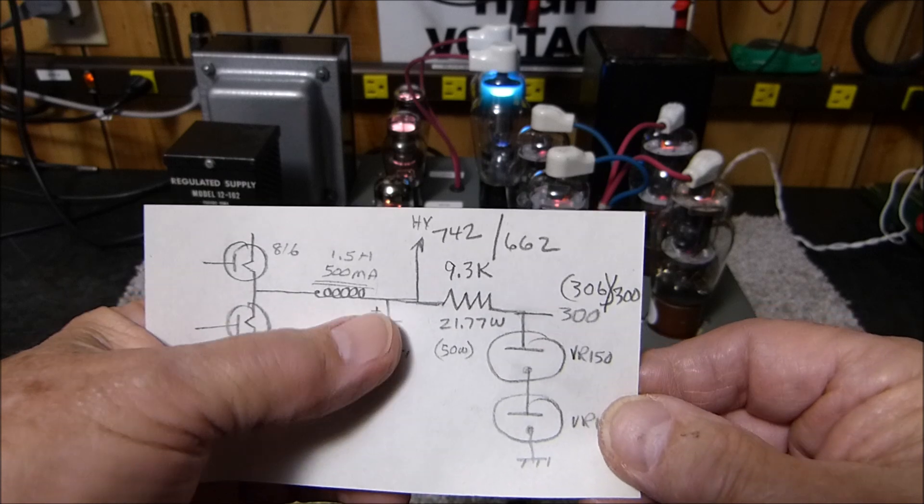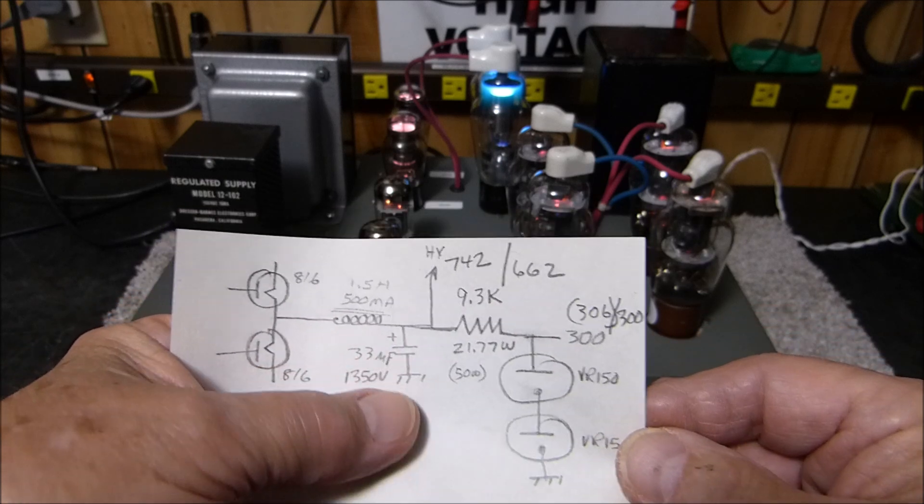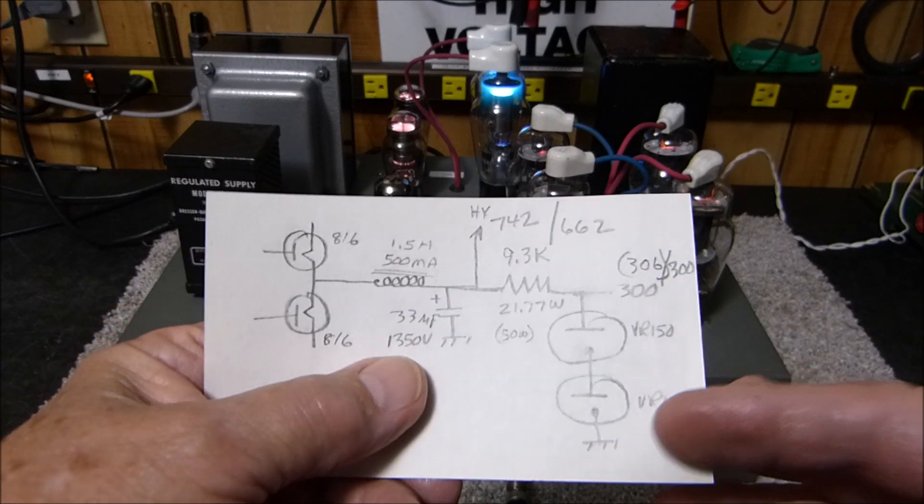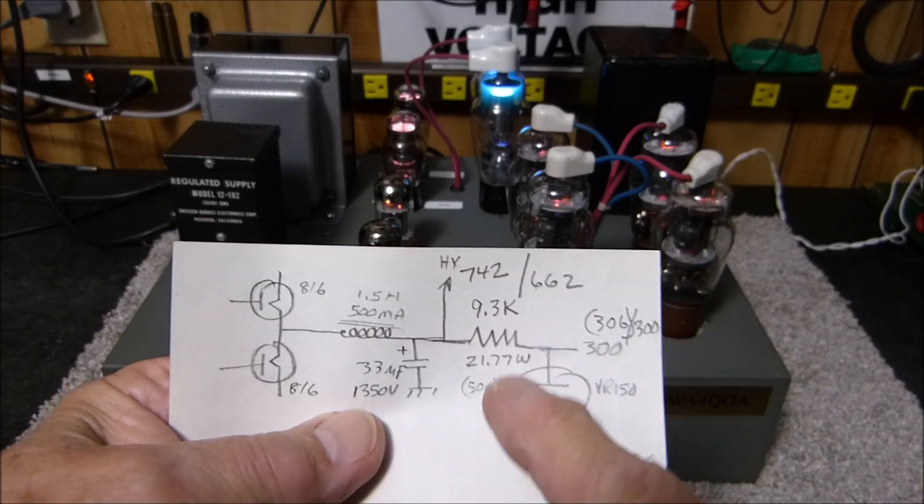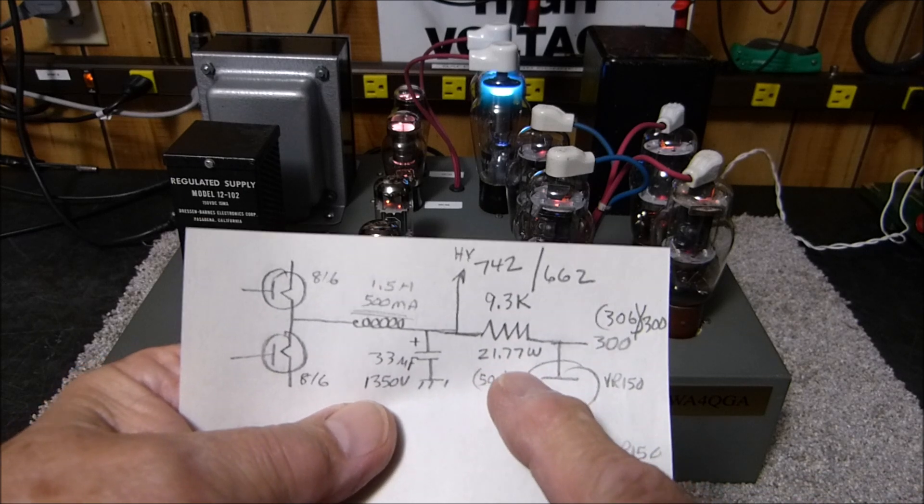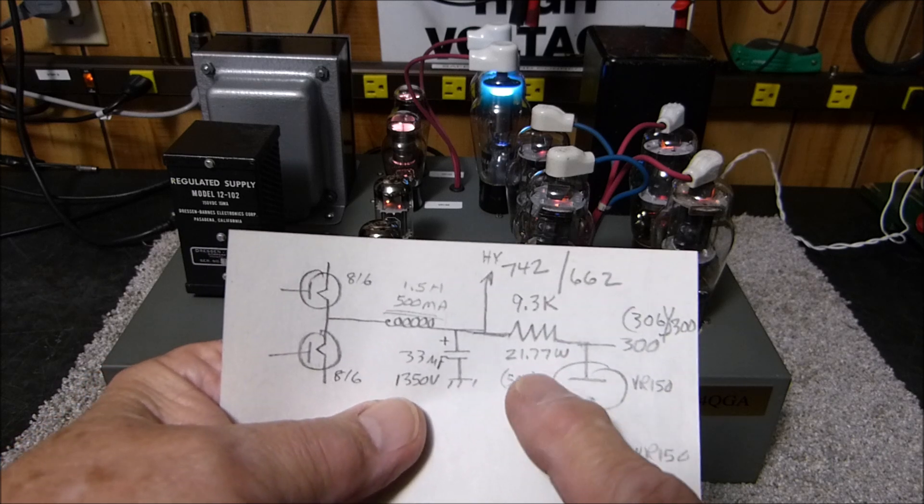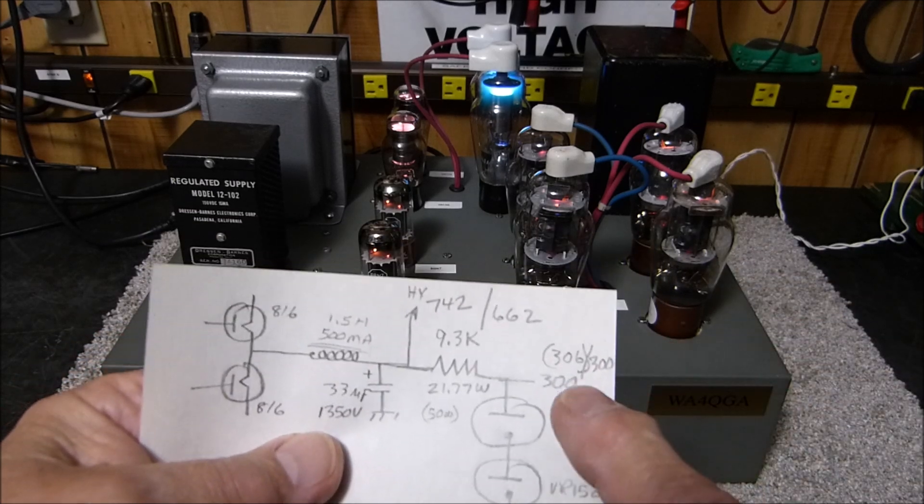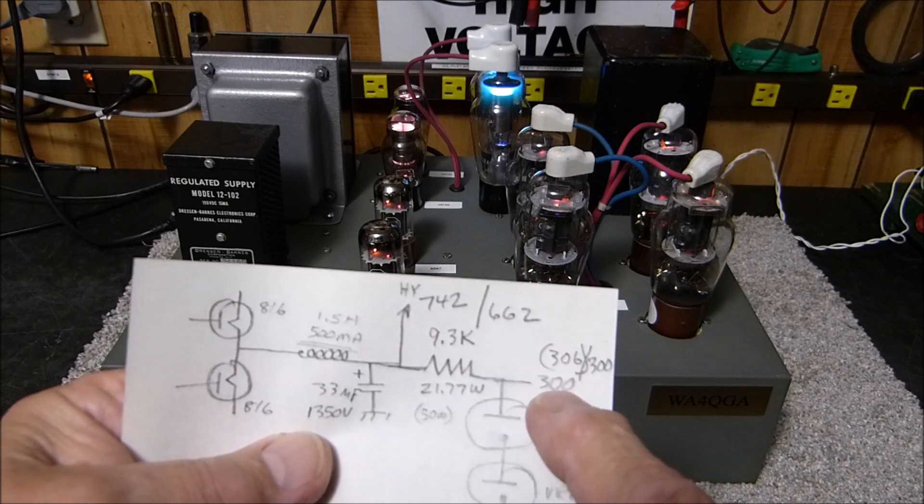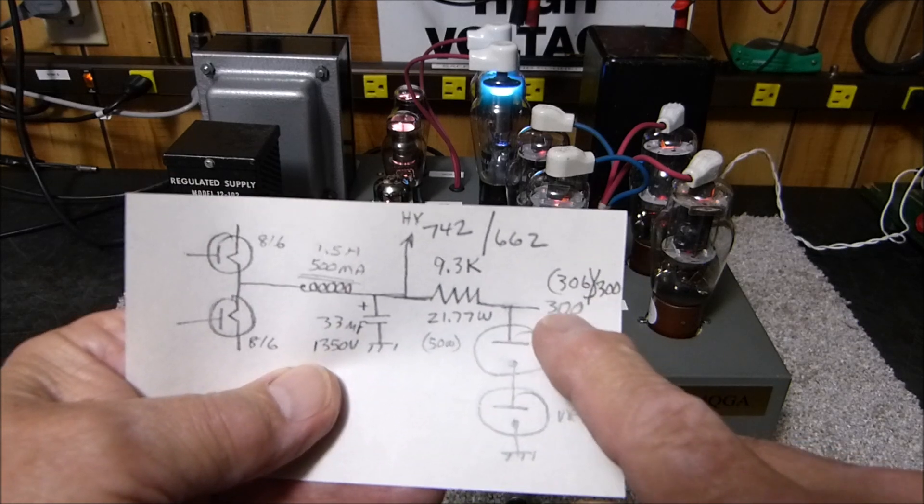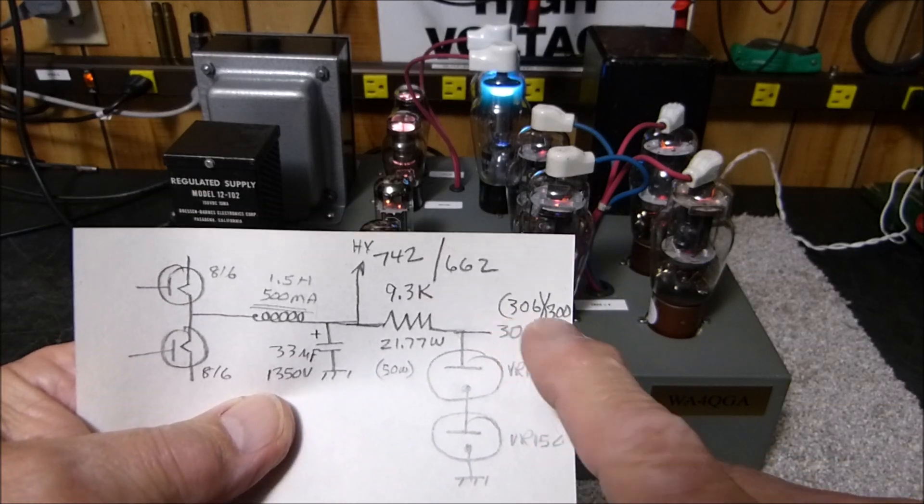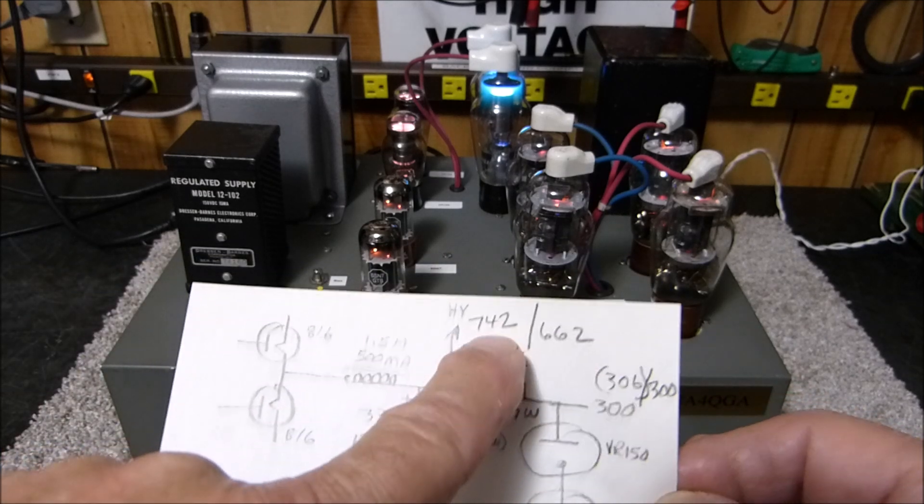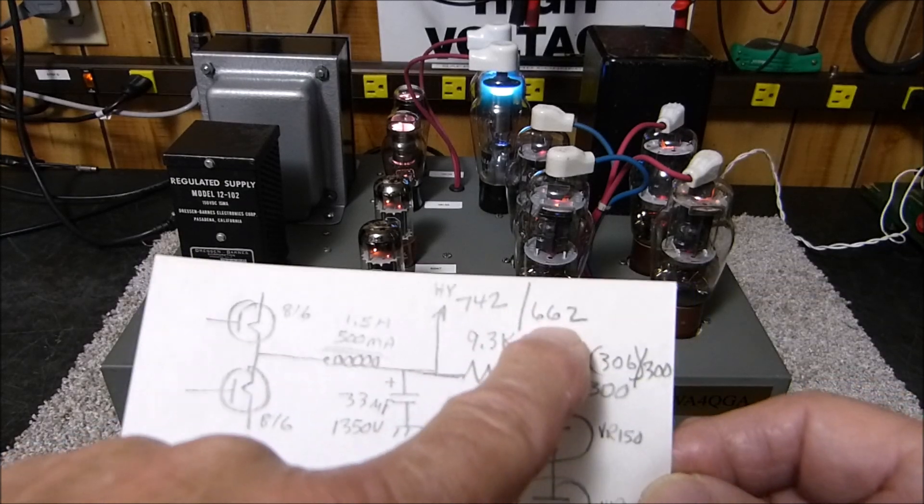Here's the 750 volts coming out, going into one and a half henry 500 milliamp choke. These are 100 microfarad 450 volt capacitors in series, giving me about 33 microfarads at 1,350 volts. The 9.3k resistor dissipates 21.77 watts - this ought to be a 50 watt adjustable. Then it goes out to the VR tubes. I get 300 volts under full load and 306 at idle.